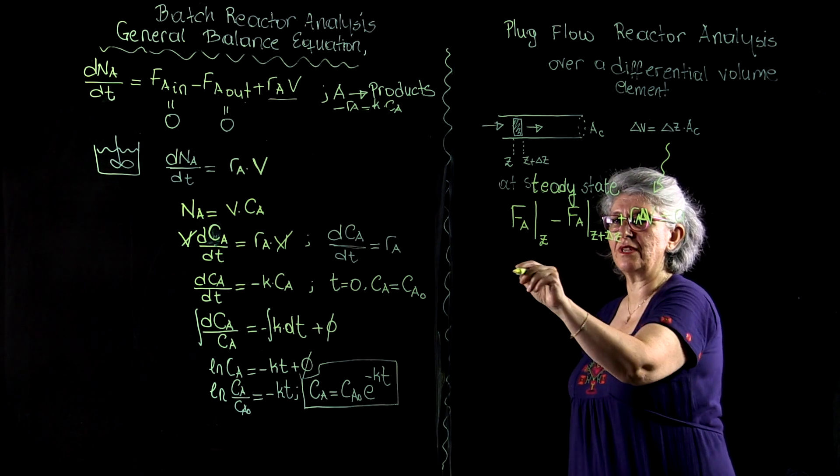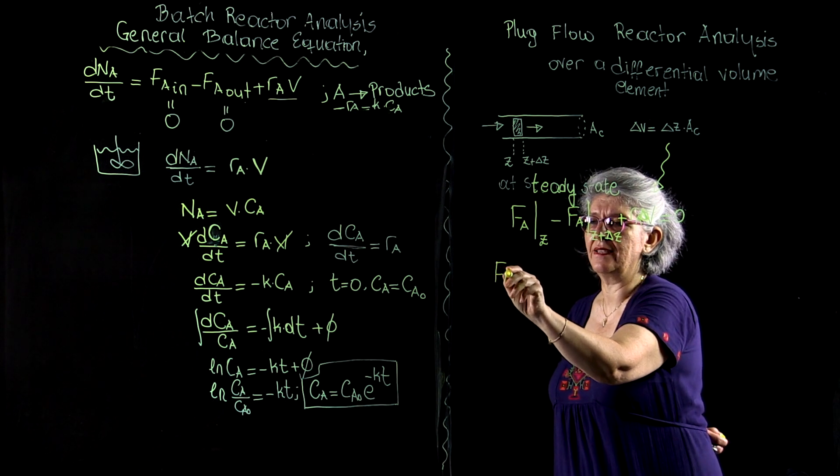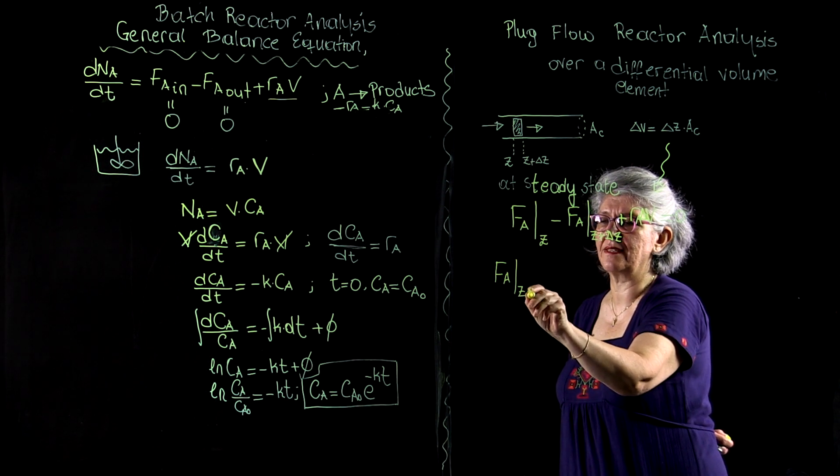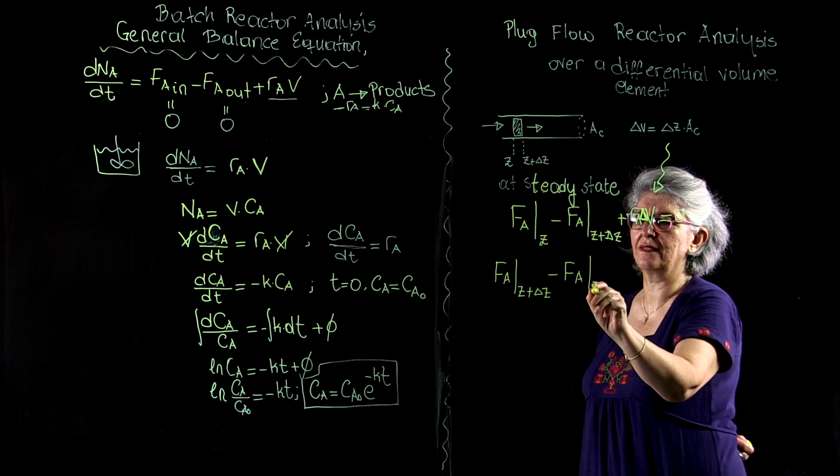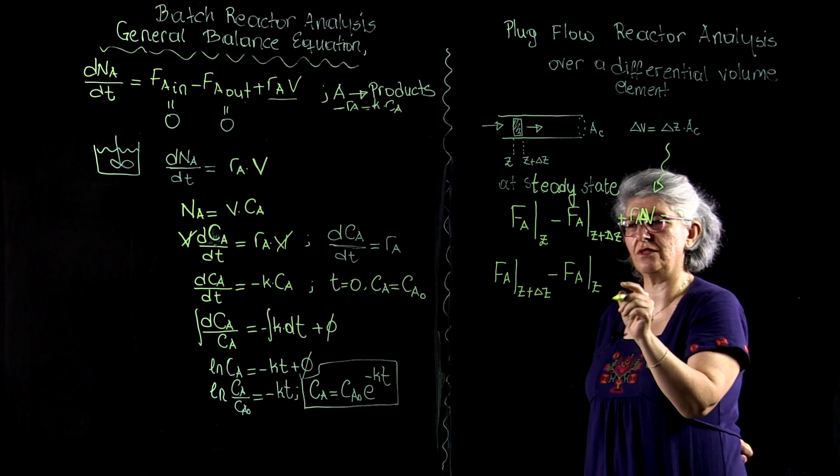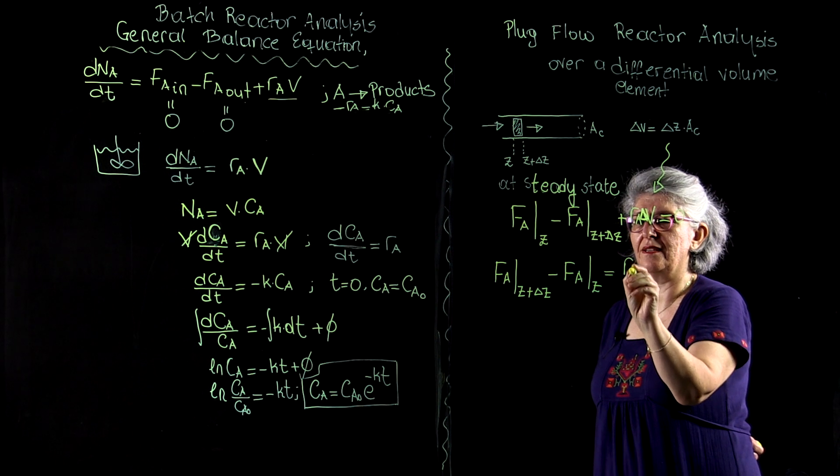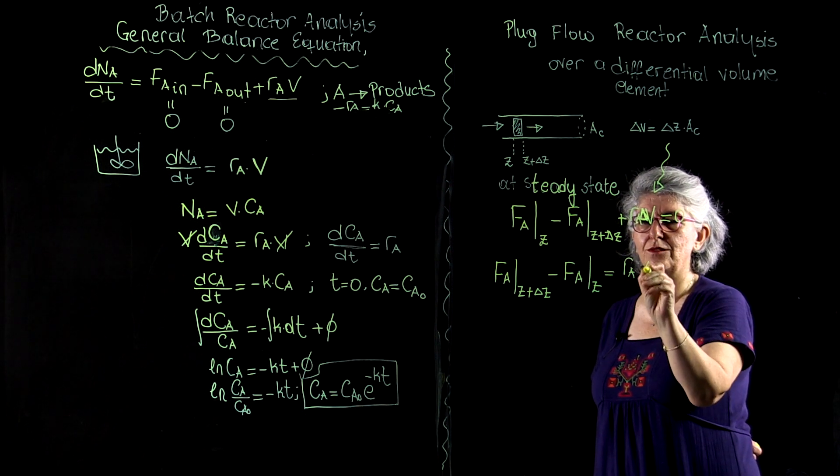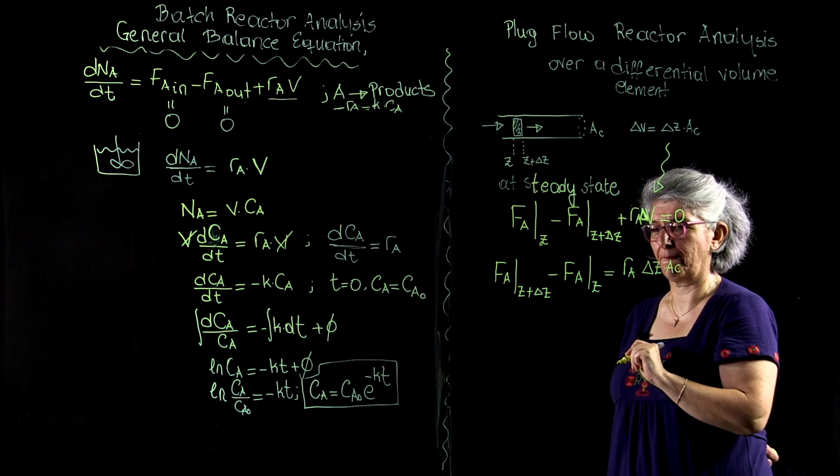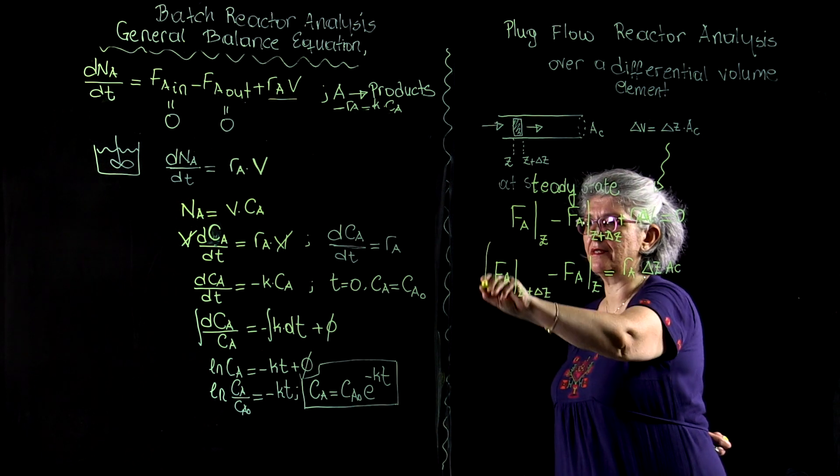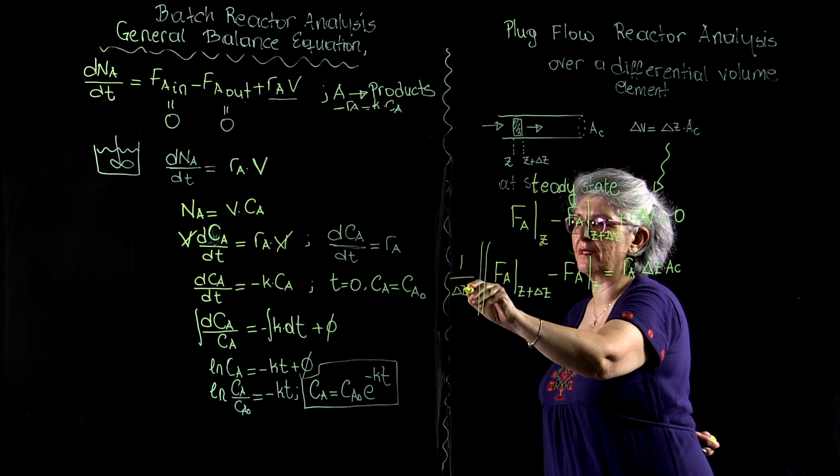I'm going to substitute this definition in here and do some rearranging. First I will take these to the other side of the equation. F_a at Z plus Delta Z minus F_a at Z is equal to R_a times Delta V, where Delta V equals Delta Z times a_C.